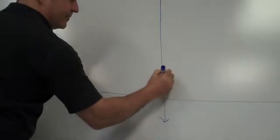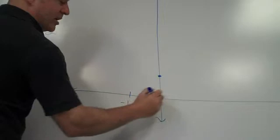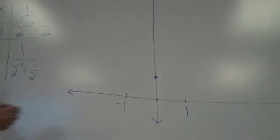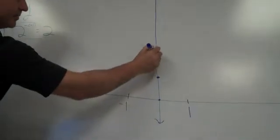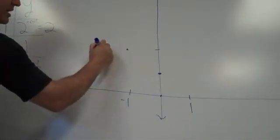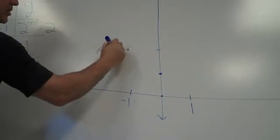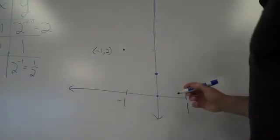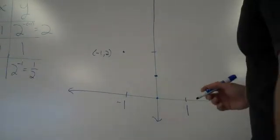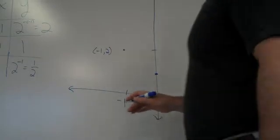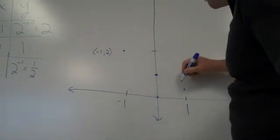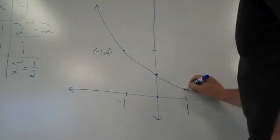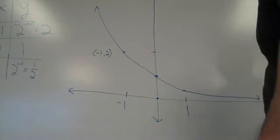I'm going to put these points in. Here's negative 1. Here's 0. Here's 1. At negative 1, we have the point negative 1, 2. Remember, if you label your points carefully, I'll be forgiving if your graph is ugly. If you don't label your points, I won't give you credit. So this is 1, 1 half. And my graph is going to look something like this.